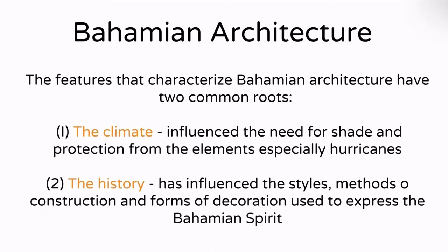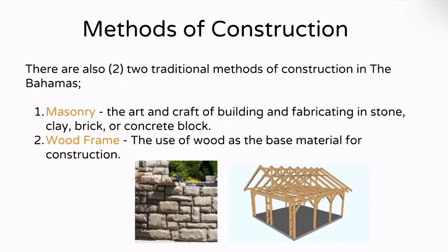Now we're going to talk about the two main methods of construction in the Bahamas. There are two traditional methods that have been used to build: one is masonry and the second is wood framing. Masonry deals with the art and craft of building and fabricating using stone, clay, brick, or concrete block. A mason is a person who works with these different mediums in construction.